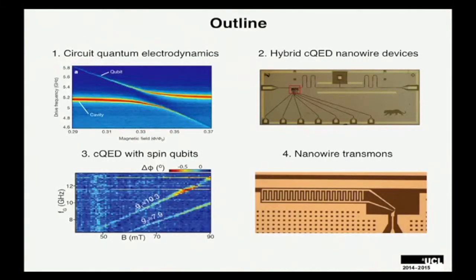This is an outline of my talk today. First, I'll give a brief introduction to circuit quantum electrodynamics, which is the architecture that we integrate our nanowire-based qubit devices into. I'll then describe this hybrid nanowire circuit qubit architecture that we explore a lot of interesting physics with. I'll show how we can use this hybrid architecture to probe single-spin dynamics. And finally, I'll talk about the most recent work from Copenhagen, in which we've been using semiconductor nanowires to make superconducting qubits.